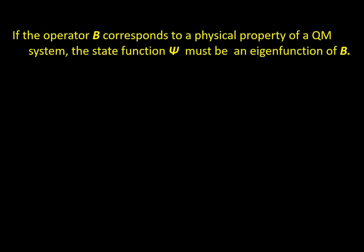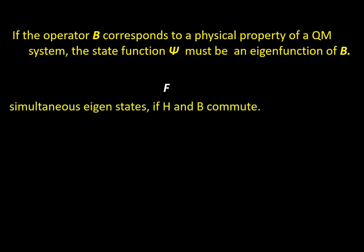If the operator B corresponds to a physical property of a quantum mechanical system, the state function ψ must be an eigenfunction of B. This is FALSE. ψ need not be an eigenfunction of B; simultaneous eigenstates require that B and the Hamiltonian H commute with each other. If they do commute, then it can be true, but not in general.